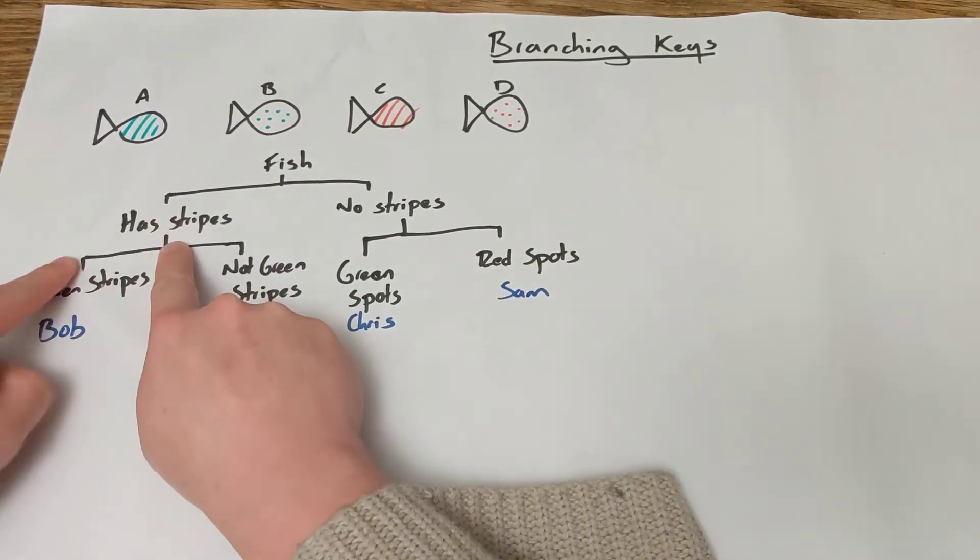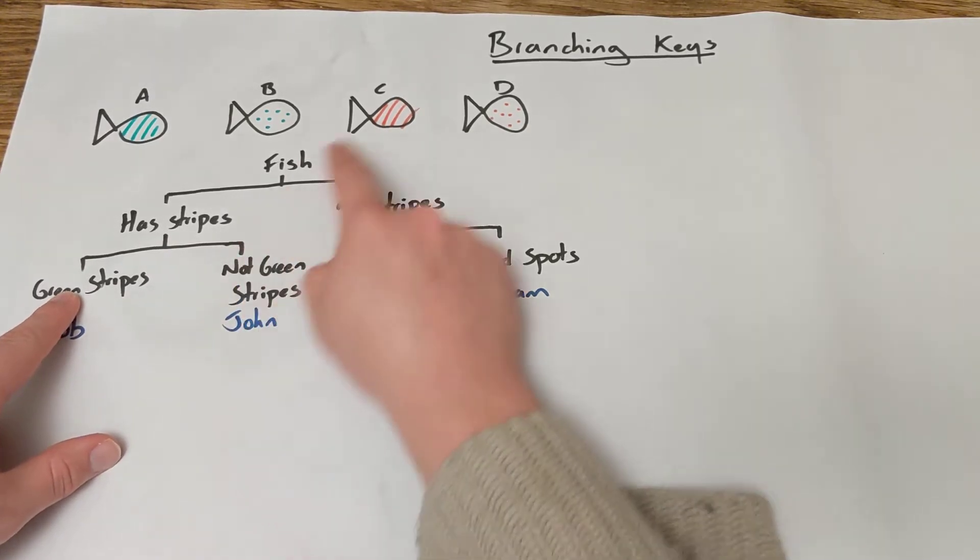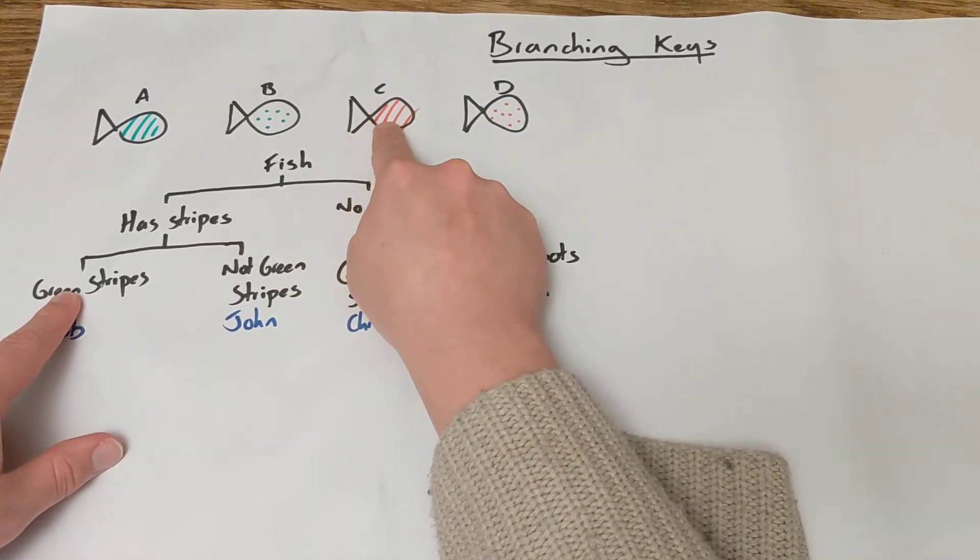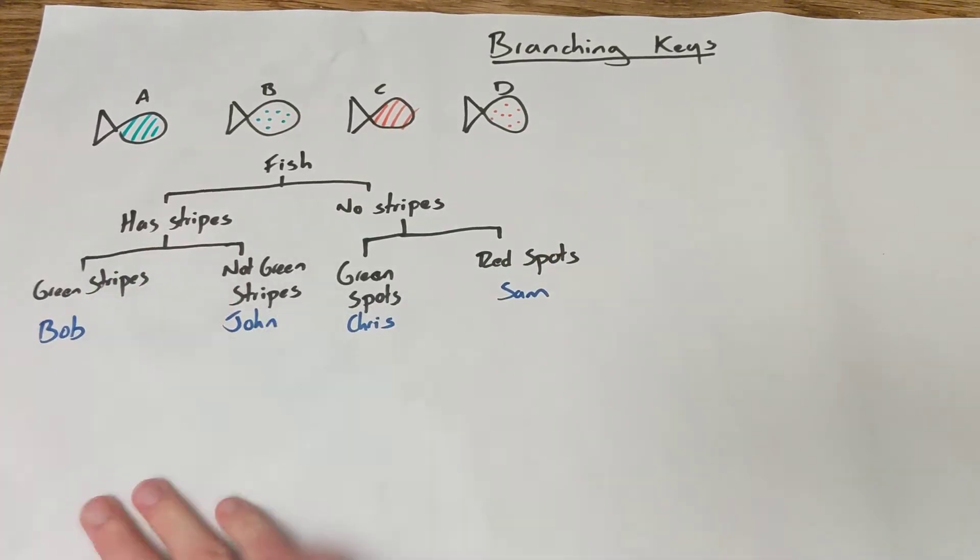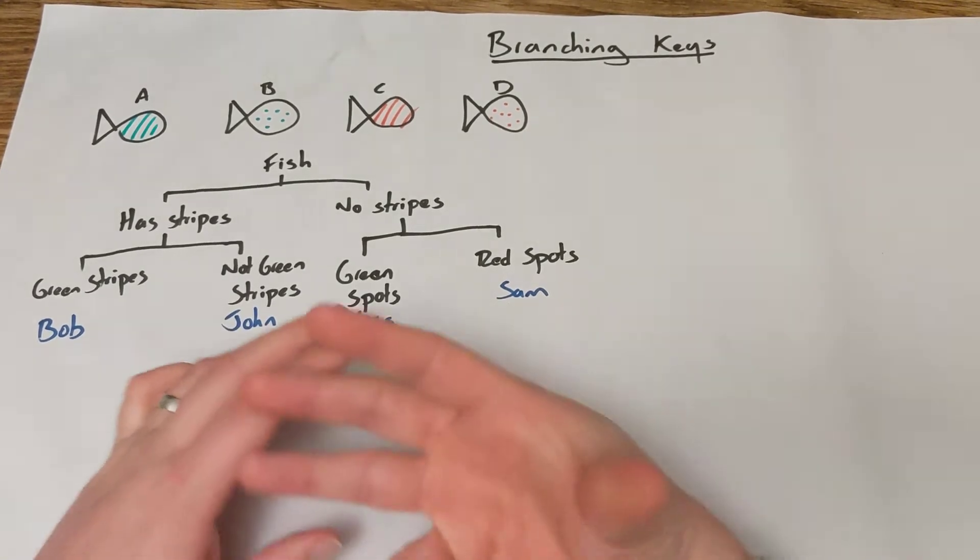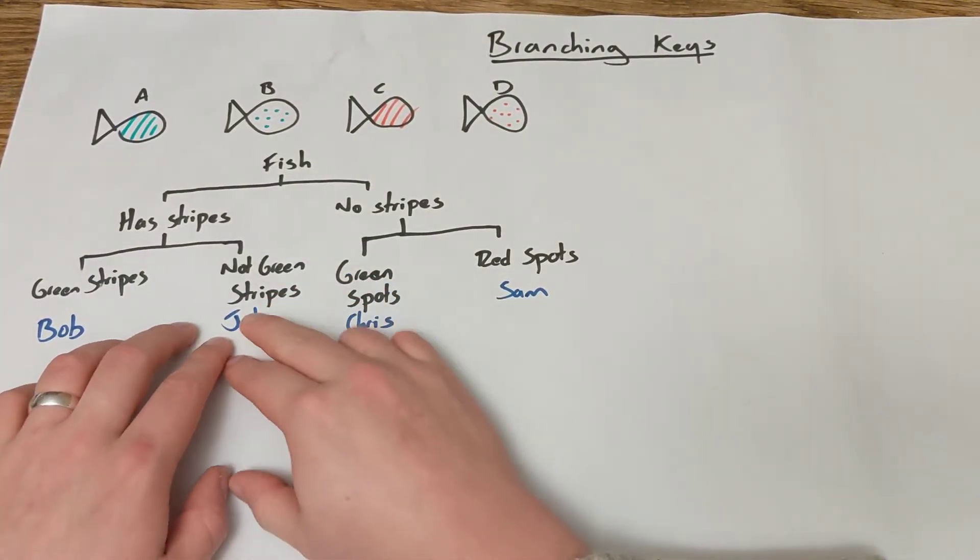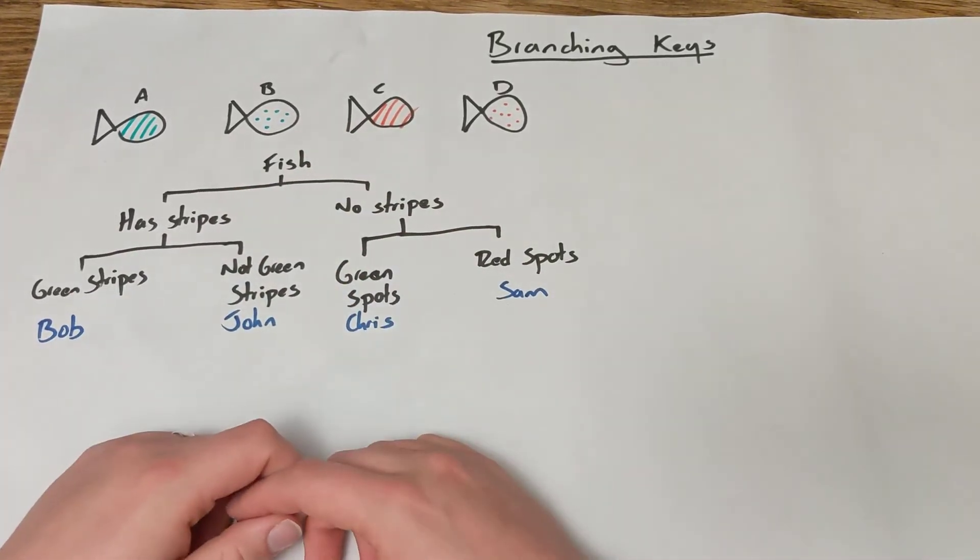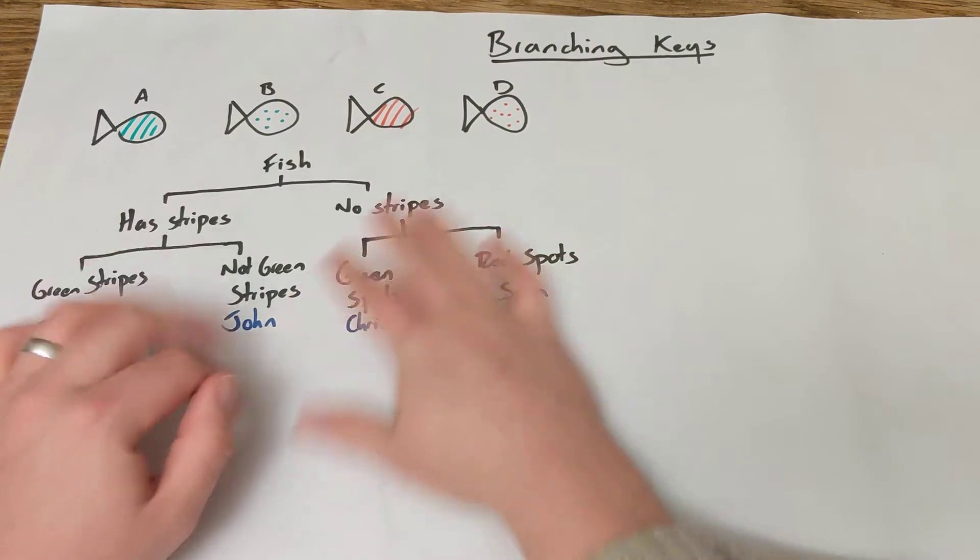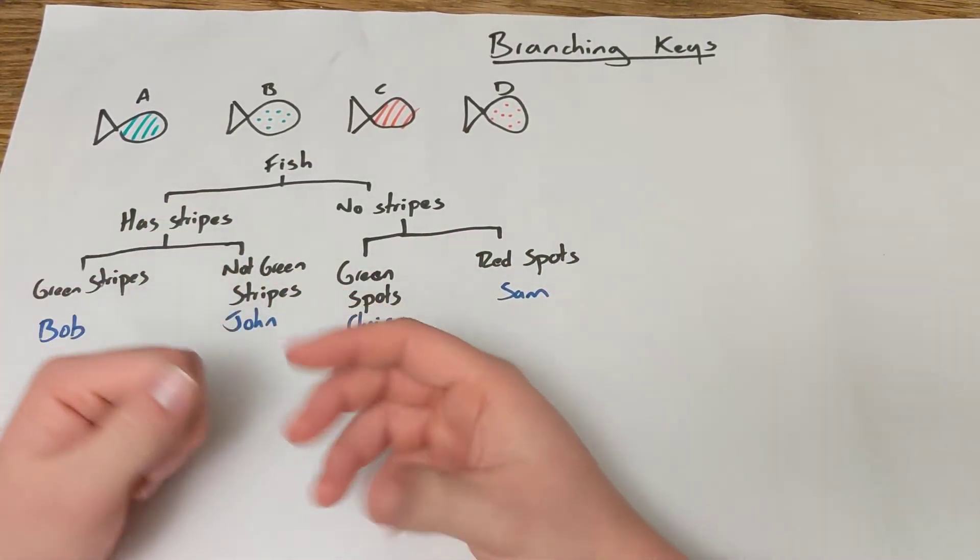So then my next option is green stripes or not green stripes. So I go to C, well those aren't green those stripes are they? So I go not green stripes and that fish is John. Now, if this was actual animals you were trying to identify, we'd instead be saying this was a trout or something if we followed the characteristics that led to that. But this is just a silly example to see how these keys work. Then we'll have a look at some ones that are a bit more authentic.